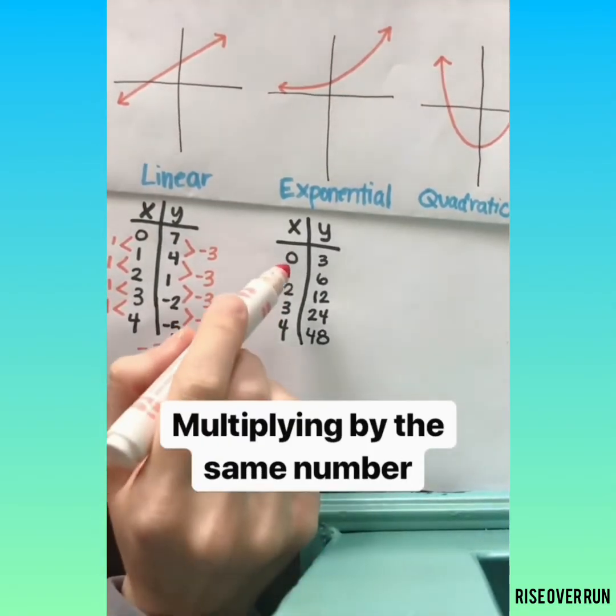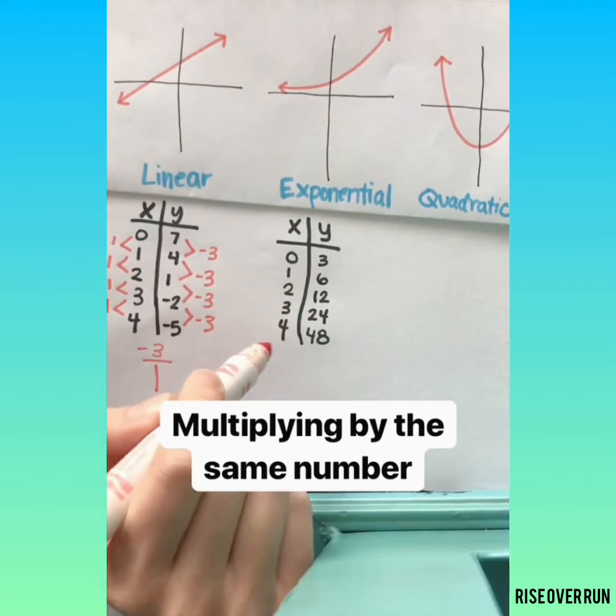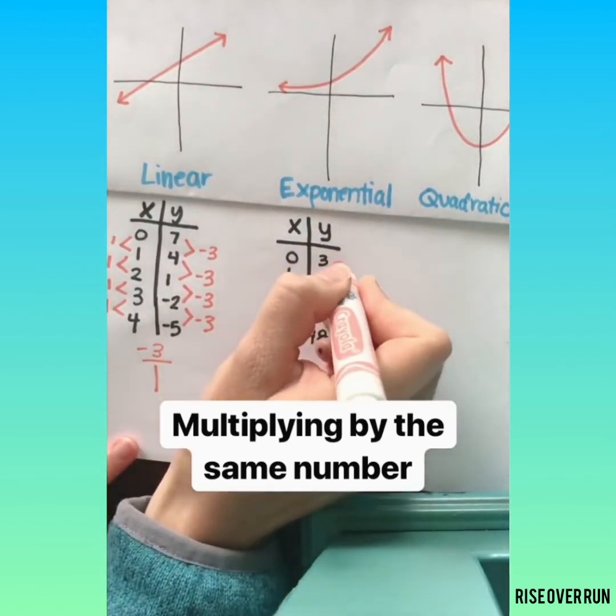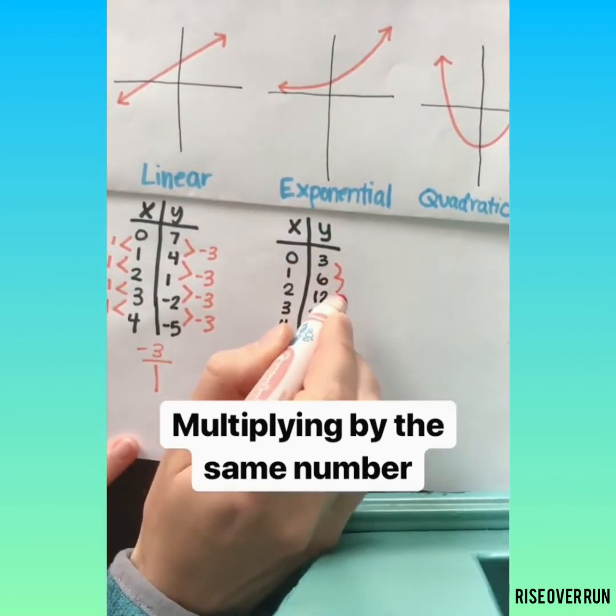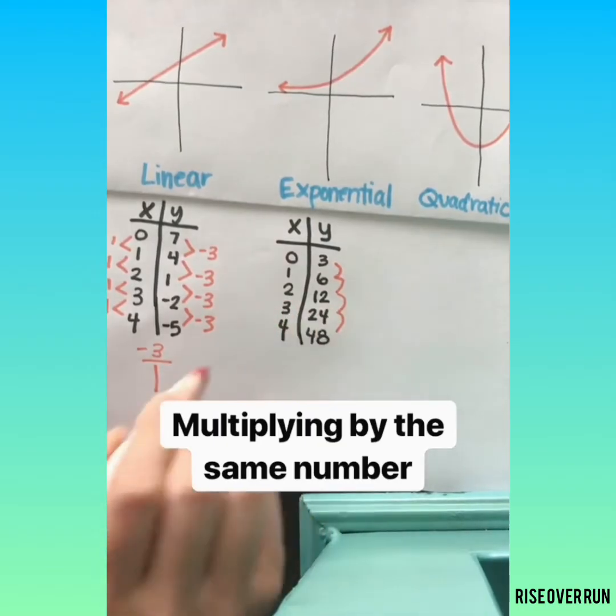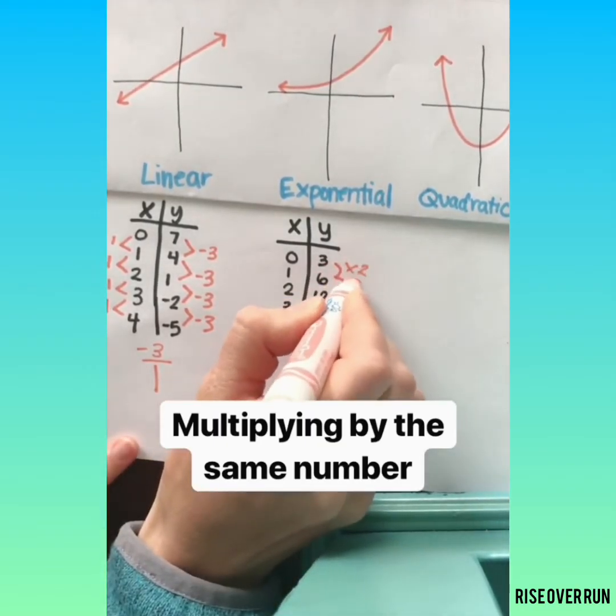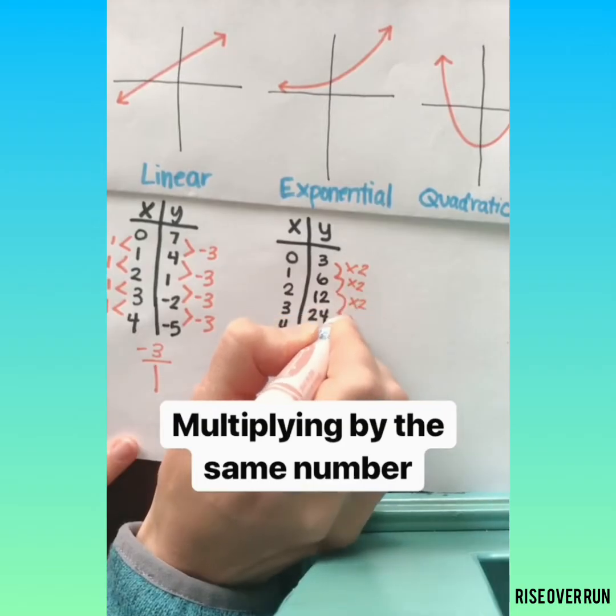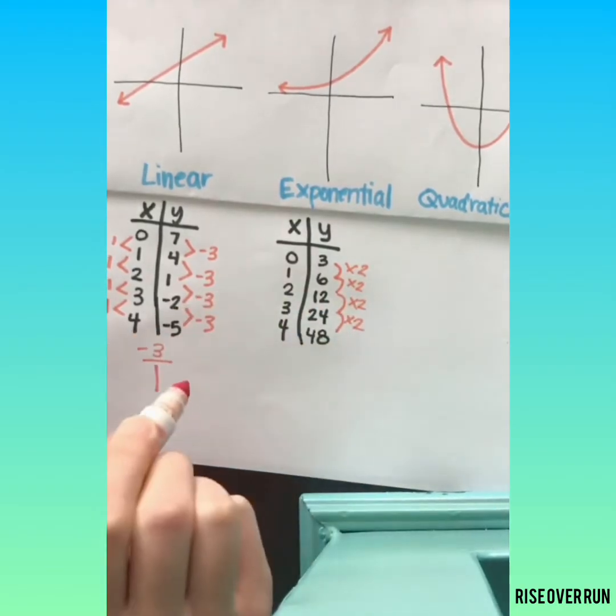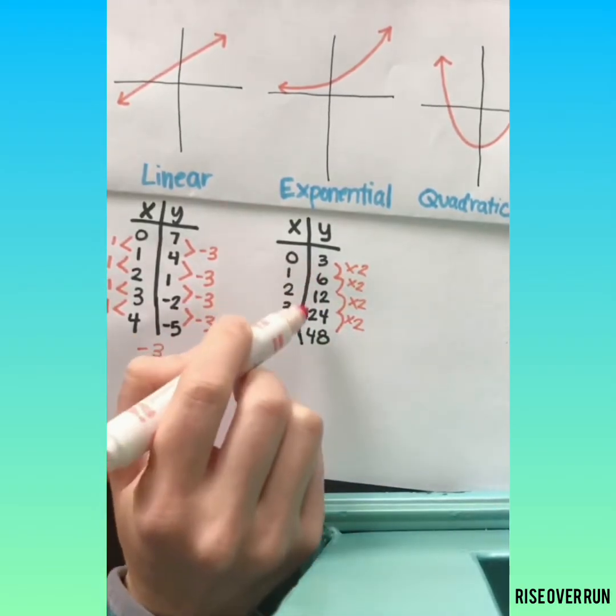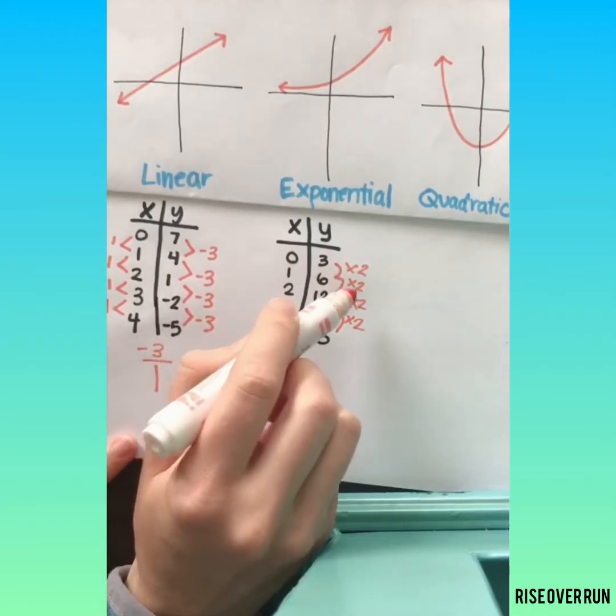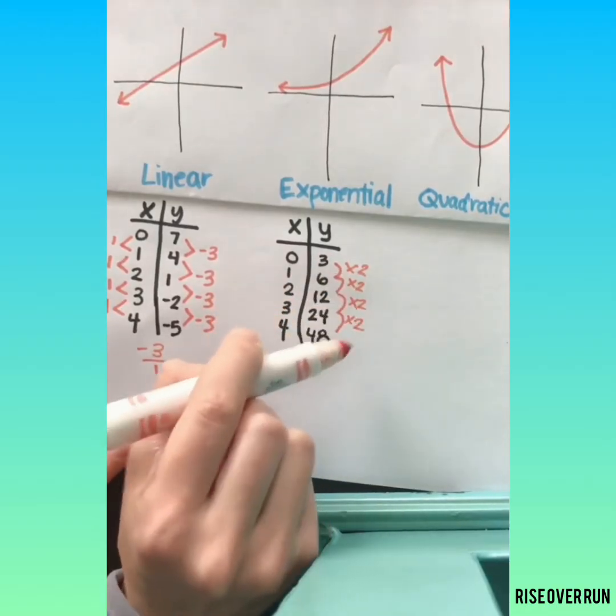Take a look at the exponential relationship here. Many times you can spot the pattern happening as you move down the table. Each time here, we're multiplying by 2. If you can spot that pattern that you're multiplying by the same number every time, then that's exponential.